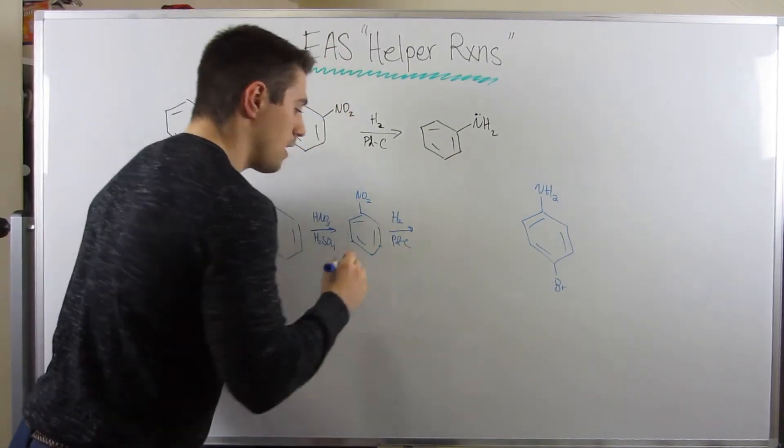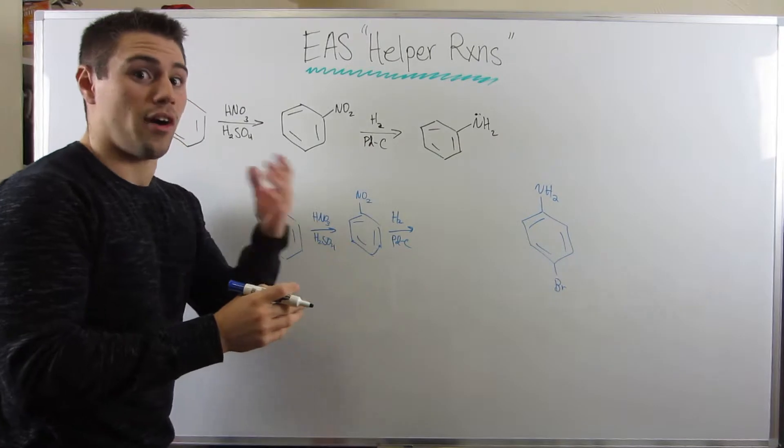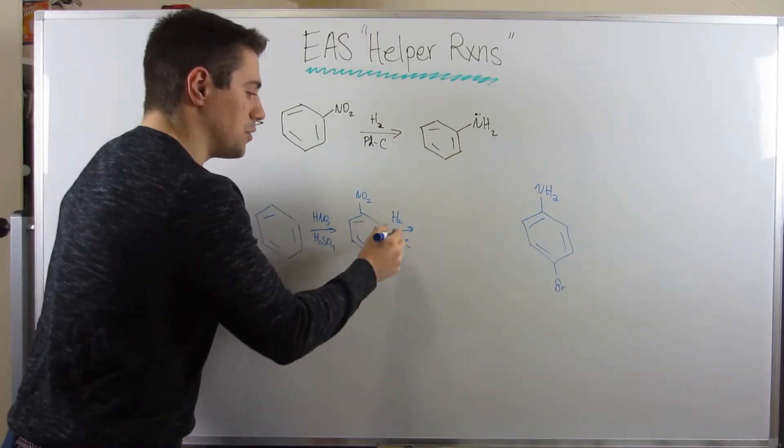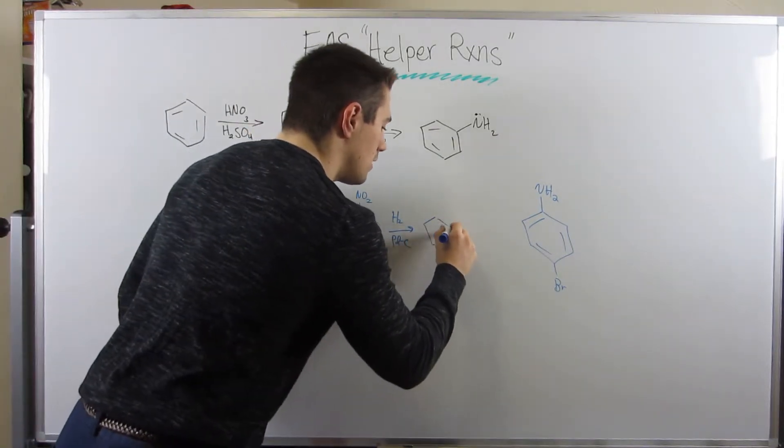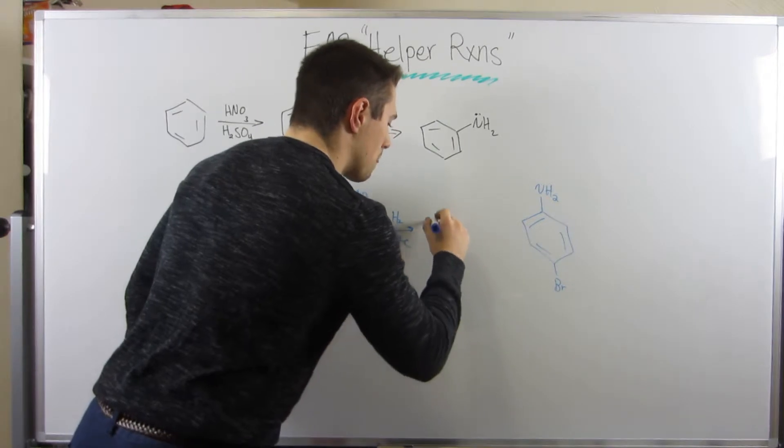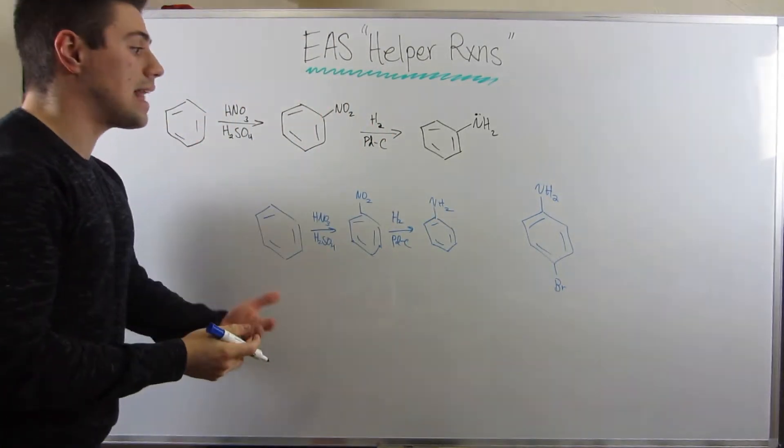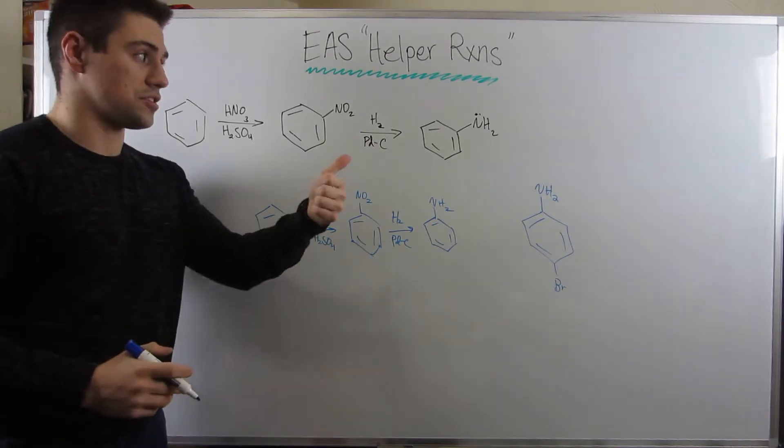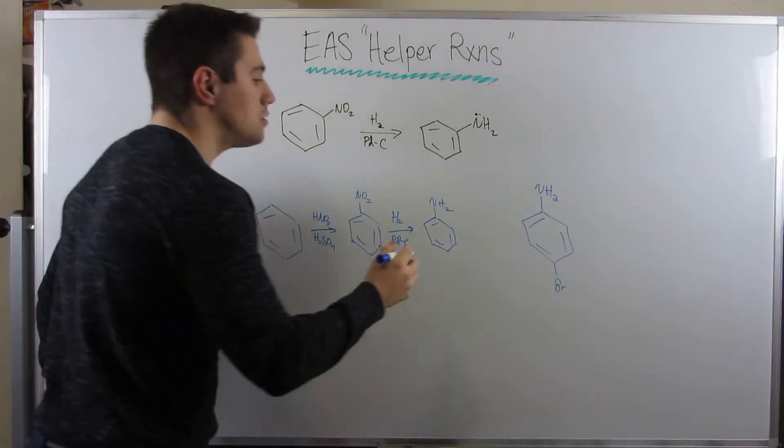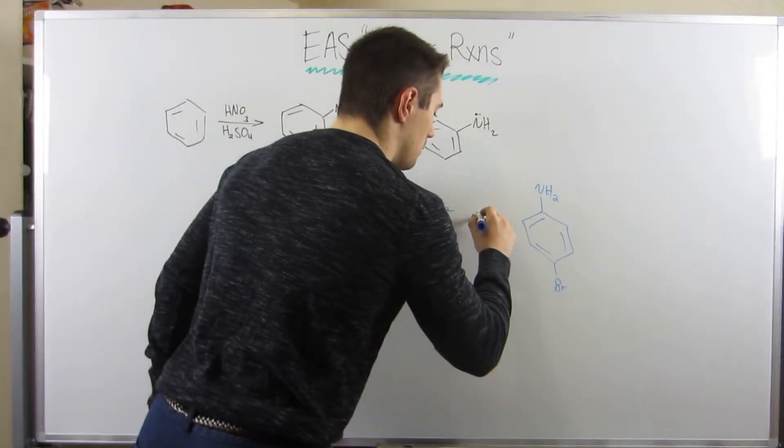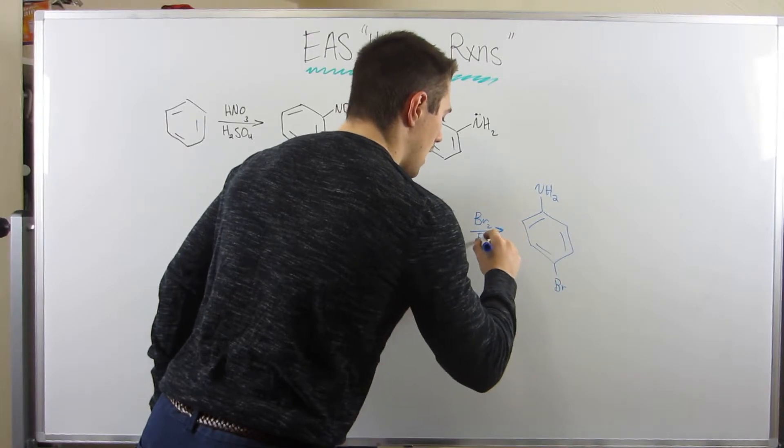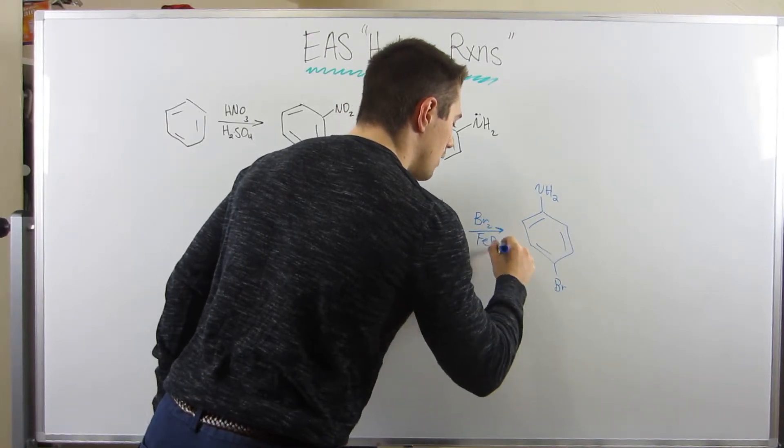Well, this is where the H2PDC comes in play. If we reduce our NO2 group, PDC, I say reduce because that's the opposite of oxidized, H2PDC, that then gives us an NH2. And that's awesome because now we have the ortho pair director we discussed up top. All we need to do is throw in a little BR2, FEBR3, and we're good to go.